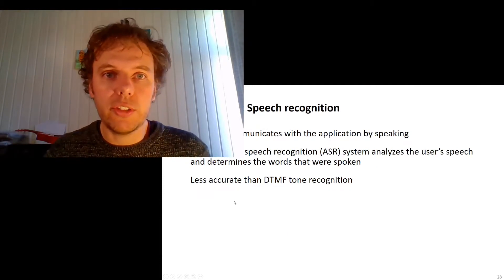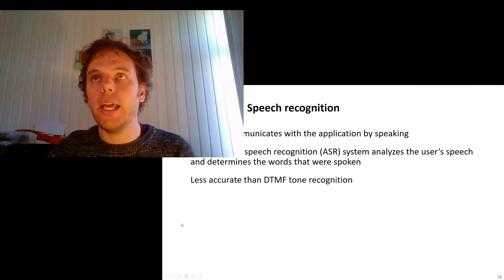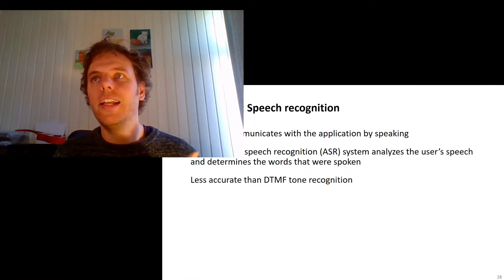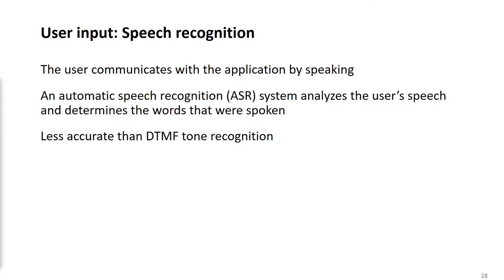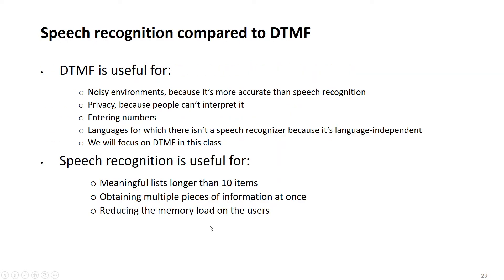Then there's speech recognition, where you say something and the application uses automatic speech recognition to analyze the user's speech and determine what words were spoken. This is of course much more natural and you don't have to remove the phone from your ear. However, it's much less accurate and complex to implement. In many cases, if you want the system to process the input and do something based on it, you use key presses. If you just want a recording — for example, recording a message — then speech recognition works fine since the system doesn't need to act at runtime.